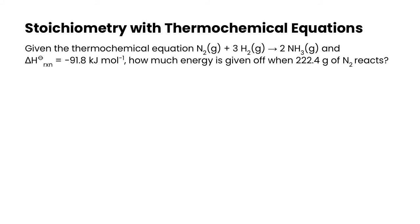Finally, because enthalpy changes are given in kilojoules per mole, and we can put them into the equations, we can do stoichiometry with them. So in this particular example, we're given the reaction N2 plus 3H2 reacts to give 2NH3. And we're asked if we're given a delta H of negative 98.1 kilojoules per mole, how much energy is given off when we have 222.4 grams of nitrogen reacting?